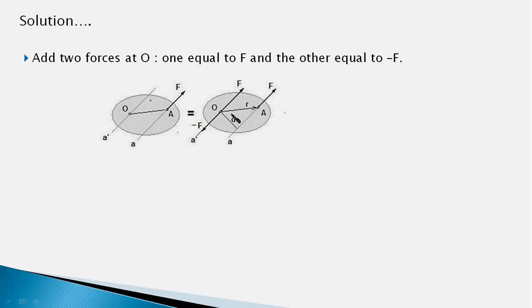So at point O, we add two forces whose line of action is A', which is parallel to A, and these two forces have equal magnitude but opposite in direction. So they are balancing each other, or they are in equilibrium, and therefore they do not alter the effect of this force on the body.